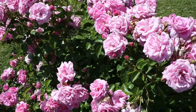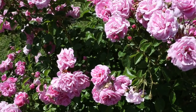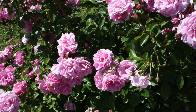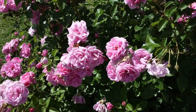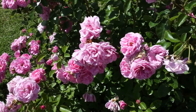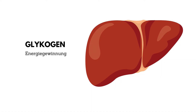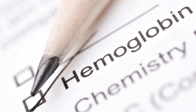Your liver performs up to 500 vital functions in your body. These include the production of certain proteins used in the formation of blood plasma, production of cholesterol and special proteins to effectively move fats around the body. Excess glucose is converted to glycogen and stored; glycogen can later be converted back to glucose for energy. The liver also regulates blood levels of amino acids, which are the building blocks of proteins.